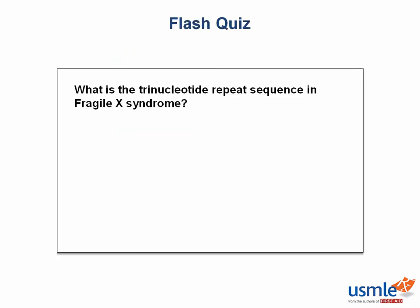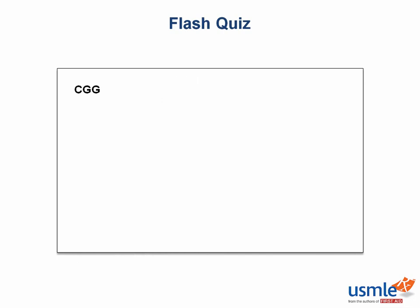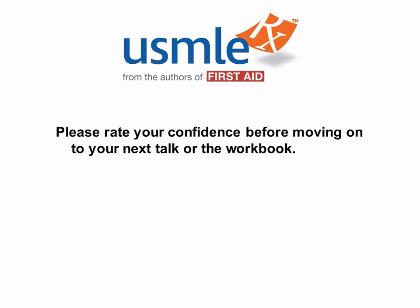So what is the trinucleotide repeat sequence in Fragile X syndrome? This is CGG. I know it may seem like an obscure fact to memorize, but this is one of those things that if you take a few minutes to drill it into your brain, it can really help you get some points on test day.